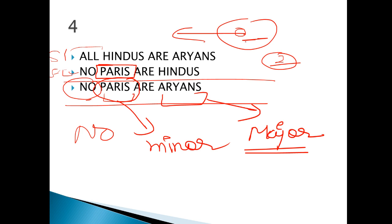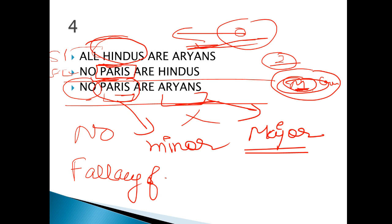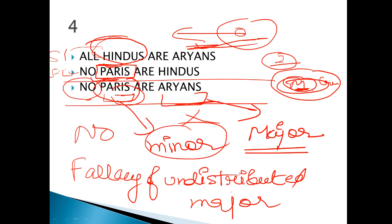First, 'Parsis' — Parsis is distributed in the second statement. For those who don't know what 'distributed' means: distributed means the term is in the overlapping/middle part of the circle, like in 'all men are cruel,' men is in the middle — that's called distributed. So with 'no,' 'Parsis' is distributed — yes. But 'Aryan' — Aryan is on the right side. Aryan should have been here instead. That's why this statement is also wrong. This fallacy is the fallacy of undistributed major — because 'Parsis' (minor) is correctly placed, but 'Aryan,' the major term, is not distributed.